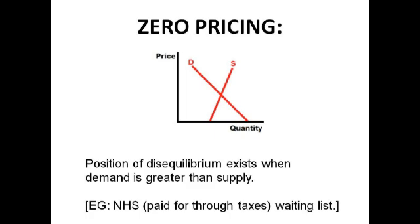Zero pricing is when something is free at the point of consumption — for example, the NHS or education, where you use the service without paying directly at that moment. You pay for it through taxes instead. This leads to excess demand because people don't pay for goods as they use them, so demand tends to be greater than supply, creating a position of disequilibrium. Make sure you know the definition and can write a few words about it.